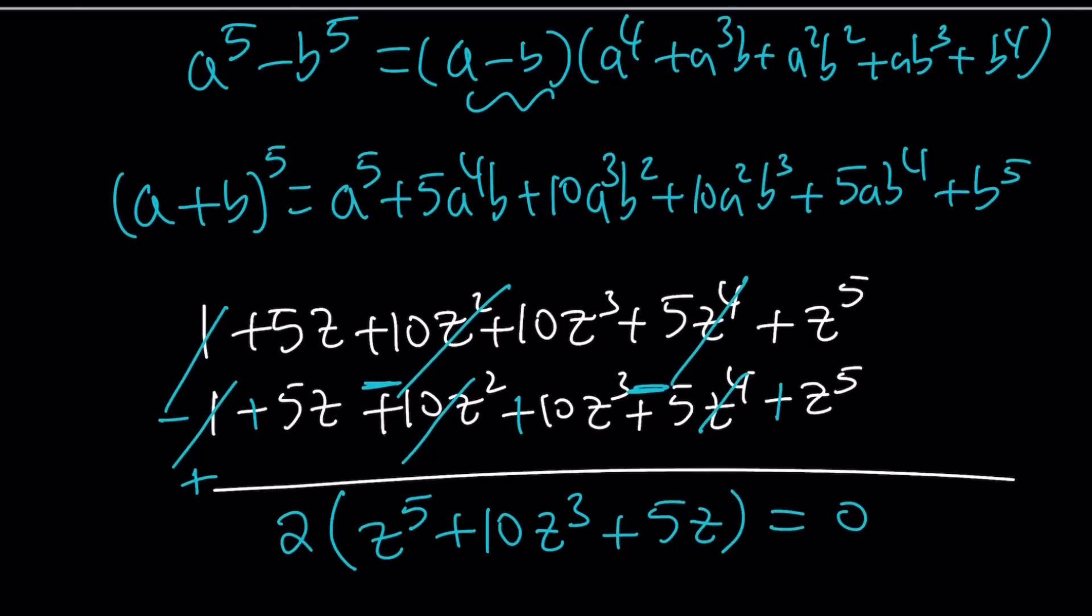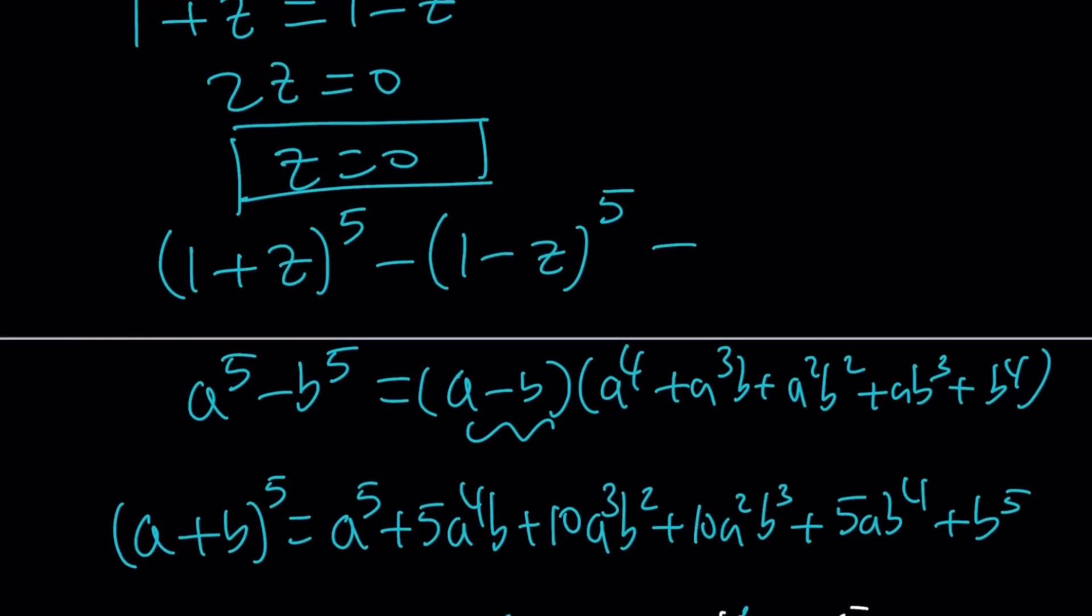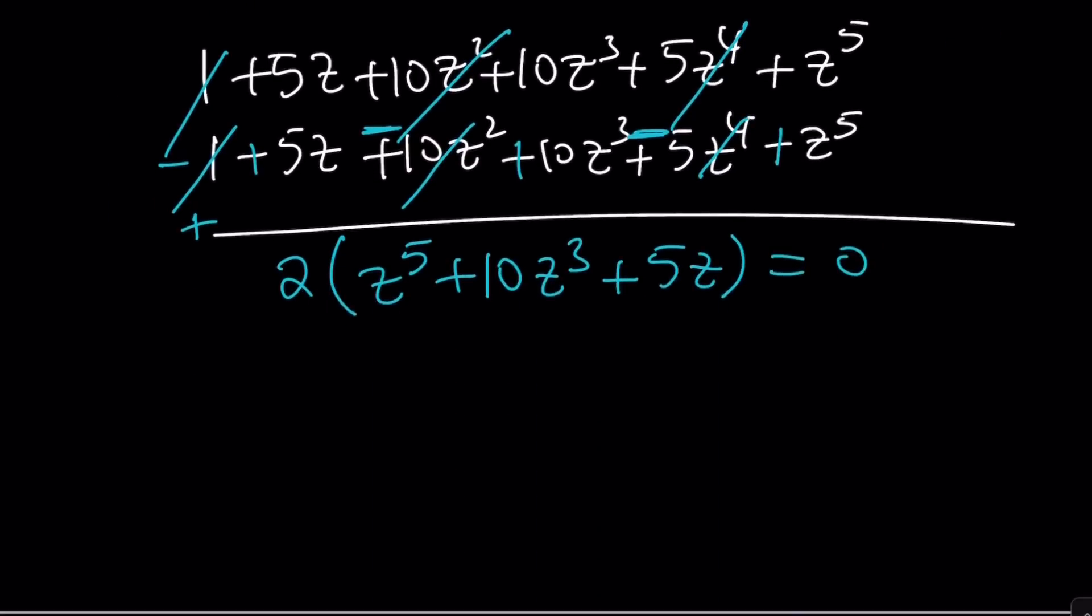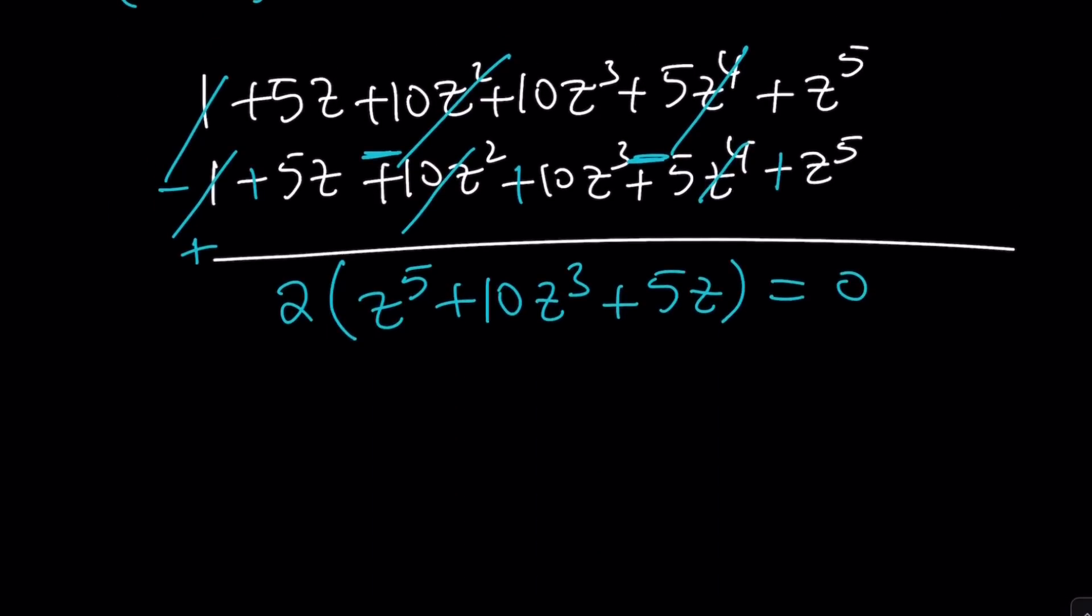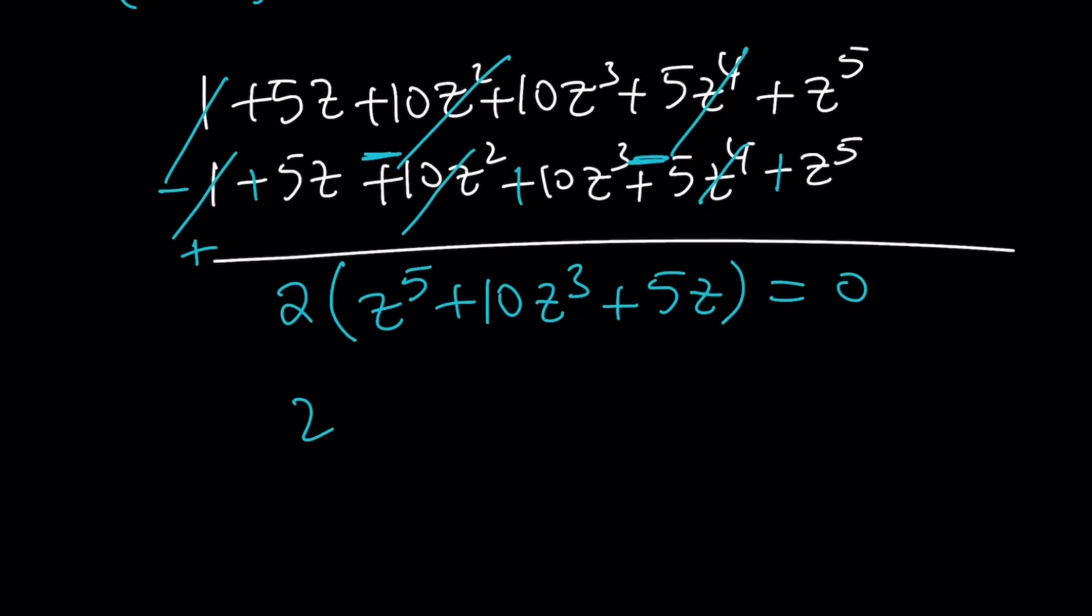Because we subtracted it, the answer is 0. Okay, so from here, obviously, we already knew that z=0 is a solution. We can take out a z. That gives us z^4 + 10z^2 + 5 = 0.